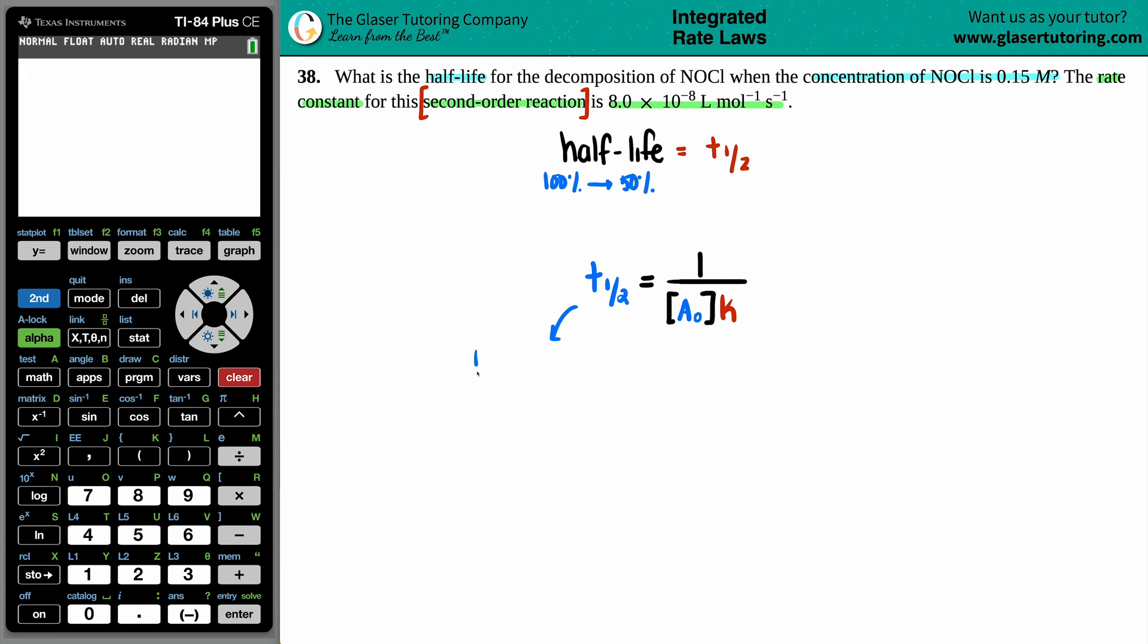So T half was the half-life. That's what we want to find out. This formula is one divided by your initial concentration of whatever your substance. That's why A0, the zero stands for zero time at initially. And then you're just going to times that by the rate constant.